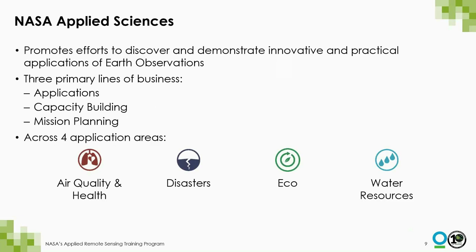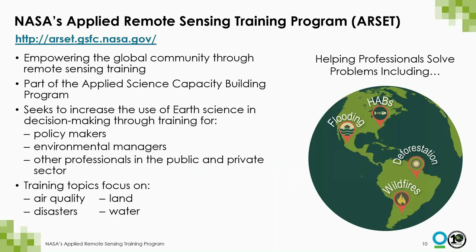The RSET program is part of NASA's Applied Sciences Division, where we promote efforts to discover and demonstrate innovative and practical applications of Earth observations. We have three primary lines of business: applications, capacity building, and mission planning. Within Applied Sciences, we focus on application areas of health and air quality, disasters, ecological forecasting, and water resources. RSET really falls under capacity building — empowering folks to use the tools.